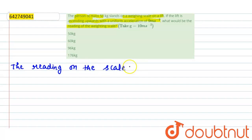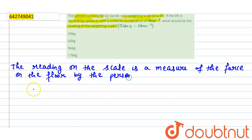The reading on the scale is a measure of the force on the floor by the person. Right, so we can say that by Newton's third law